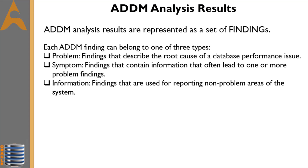Each problem finding is quantified by an impact, which is an estimate of the portion of DB time caused by the finding's performance issue. A problem finding can be associated with a list of recommendations for reducing the impact of the performance problem. Each recommendation has a benefit — an estimate of the portion of DB time that can be saved if the recommendation is implemented. A list of recommendations can contain various alternatives for solving the same problem.